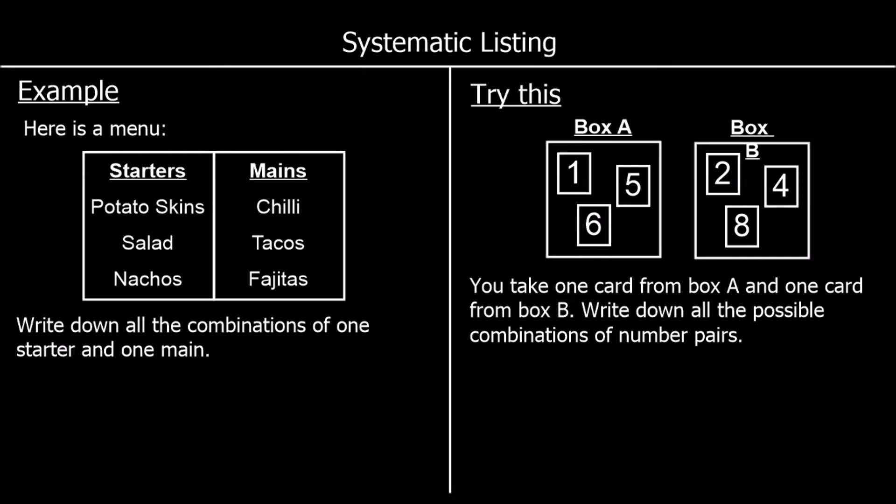In this example we've got a menu with three starters and three mains and we need to write down all of the combinations of one starter and one main. So if we were picking from this menu and we were getting one starter and one main, what are all the different options?